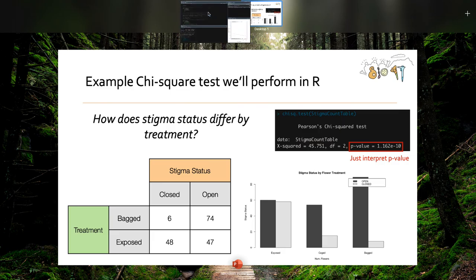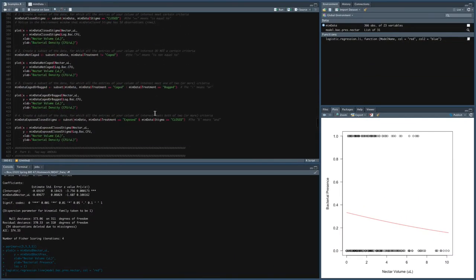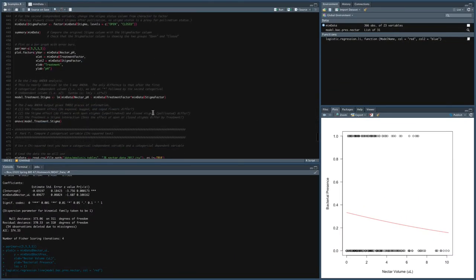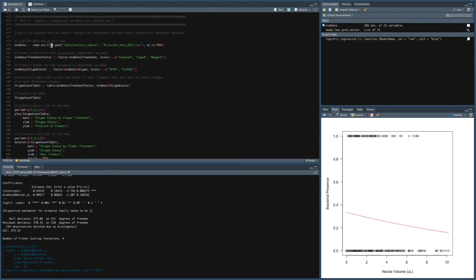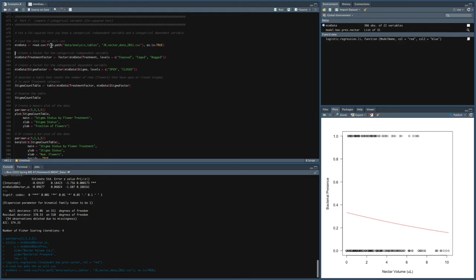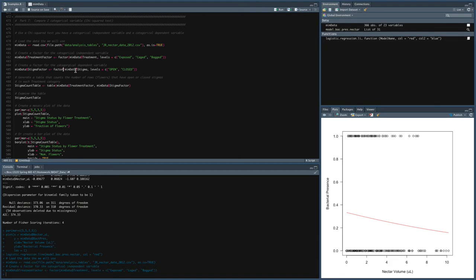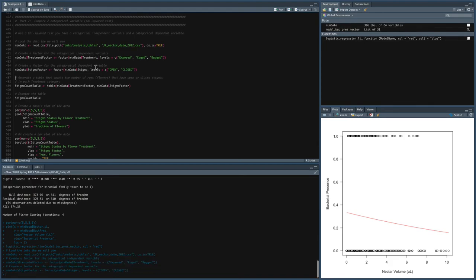So what I'm going to do is go back to RStudio and walk you through the code about the wonderful world of chi-square tests, which is part 7. So just like we've done before, we'll load mimdata and we'll create a factor for the categorical independent variable, those are the treatment levels, and a factor for the categorical dependent variable, which is stigma status.